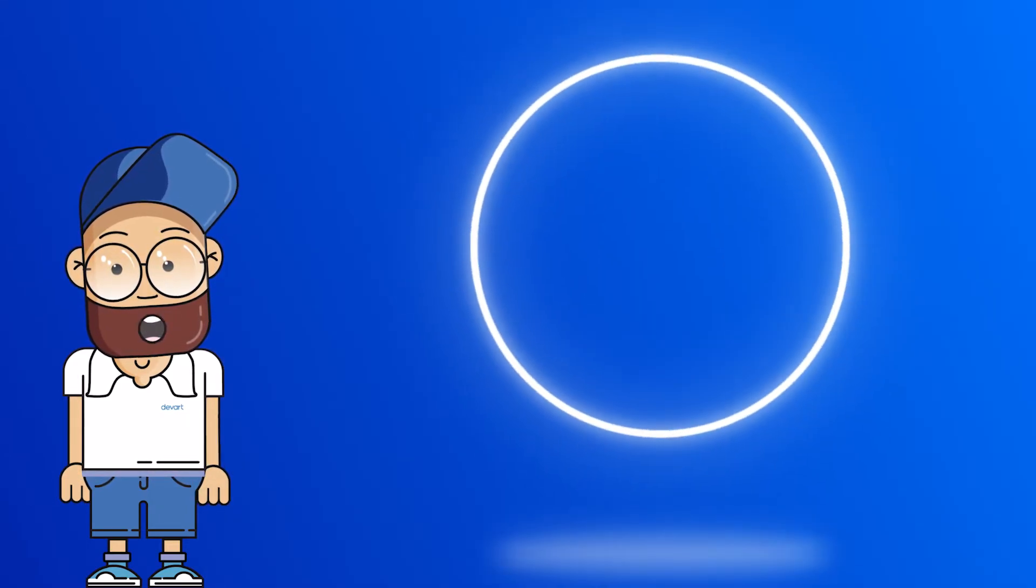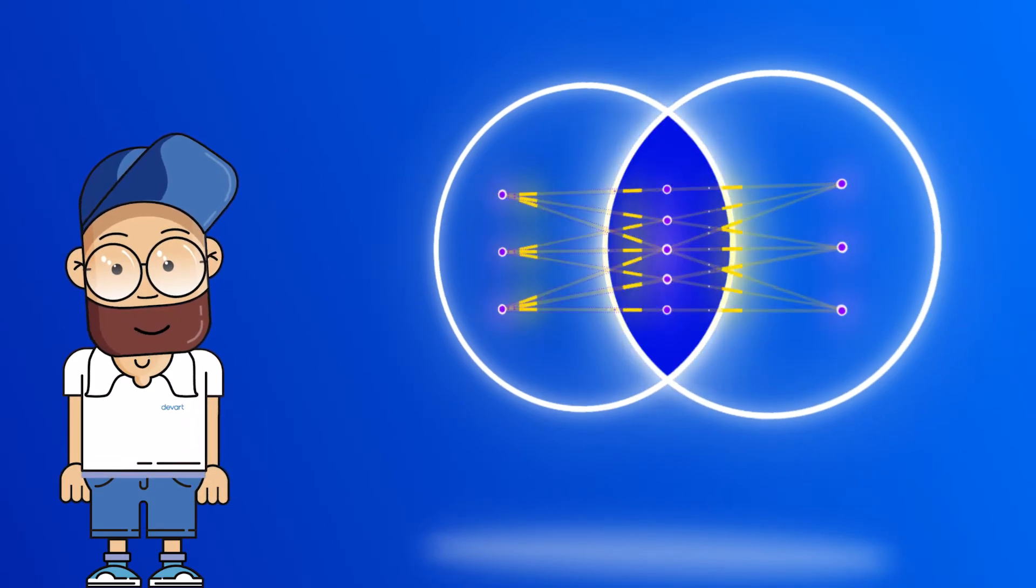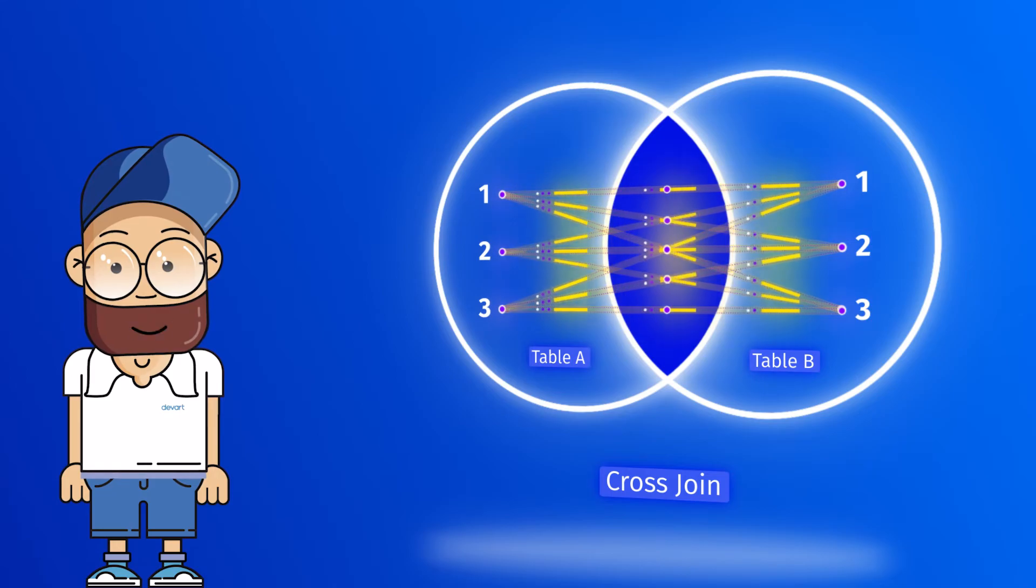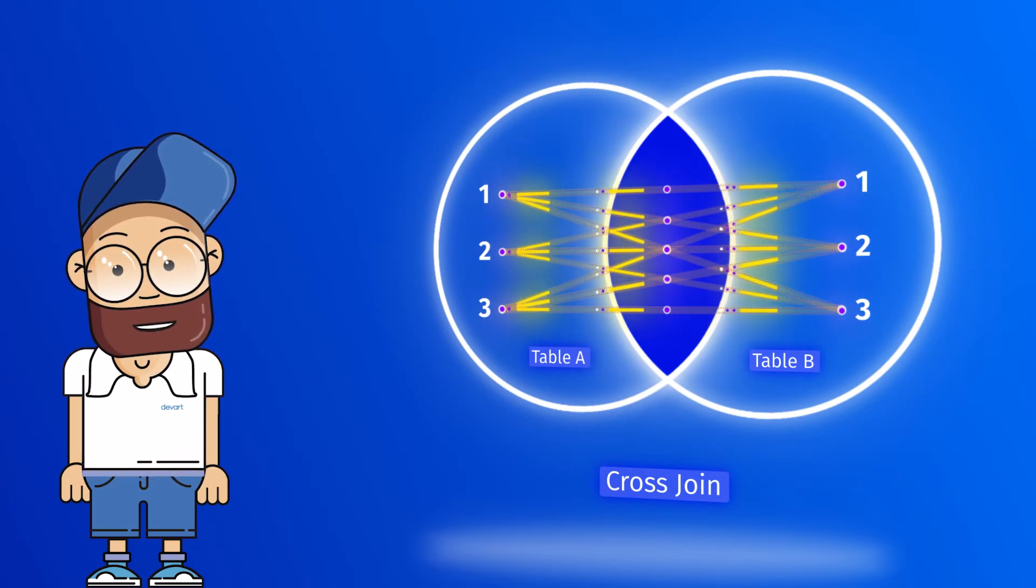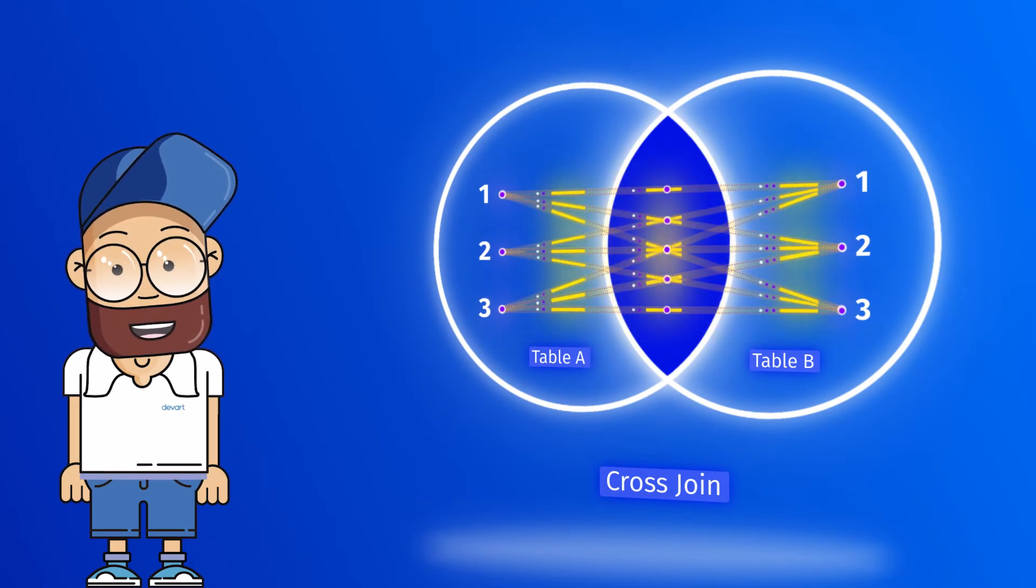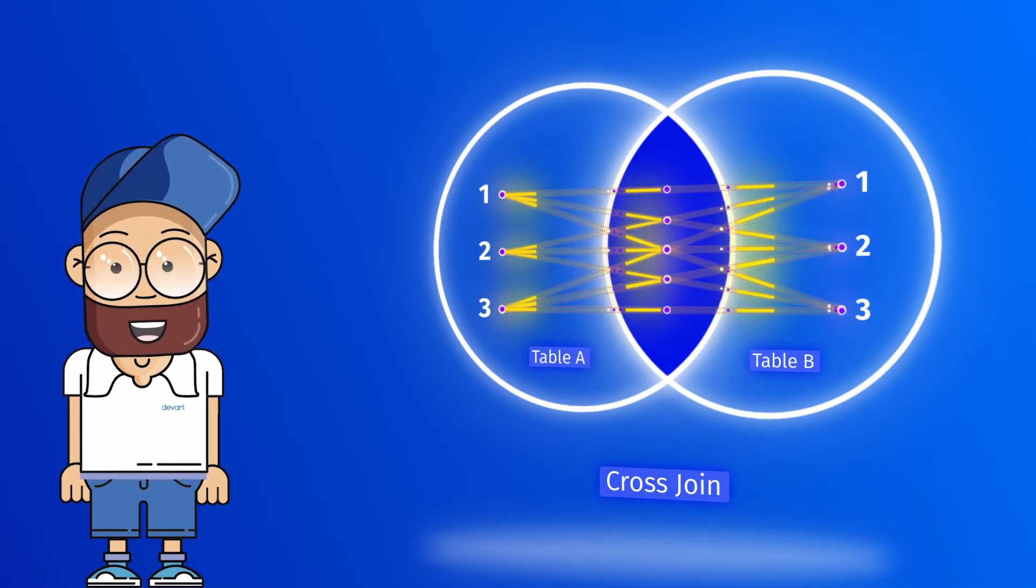The cross join in Postgres, also known as a Cartesian join, returns all combinations of rows from each table. In fact, the cross join joins every row from the first table with every row from the second table, and its result contains all combinations of records in two tables.